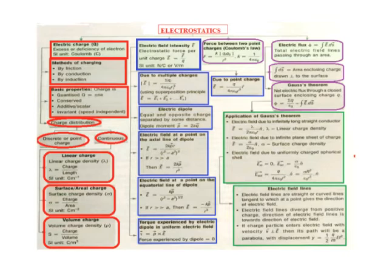The basic properties of charge: Charge is quantized — Q is equal to plus or minus Ne, where N is the number of electrons. Next, it is conserved. Then, it is additive or scalar — electric charge is a scalar. And next, it is invariant, meaning it is independent of speed.